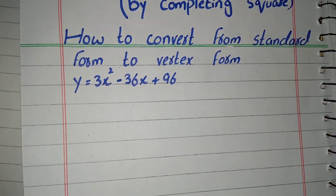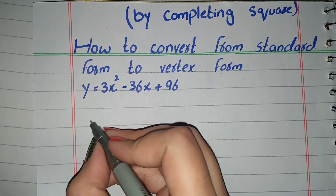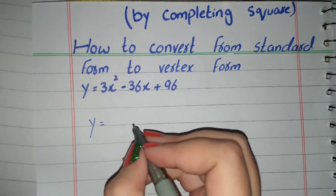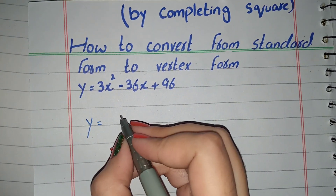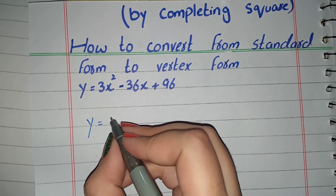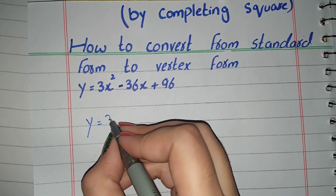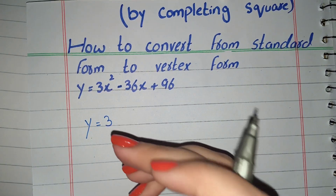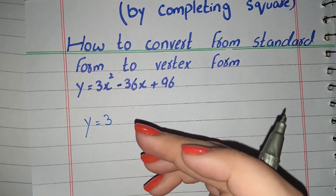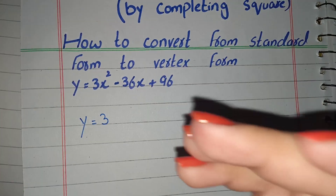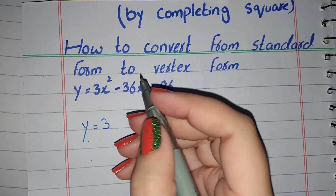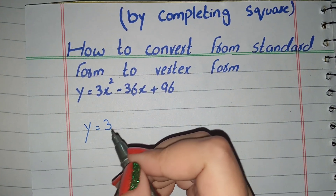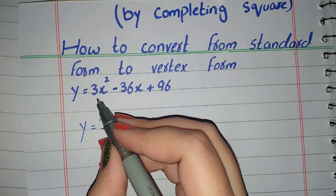The first step is to take a common factor from these terms. You have to take common only the coefficient of x squared. The coefficient of x squared is 3 here, so we will take only 3 as the common factor.